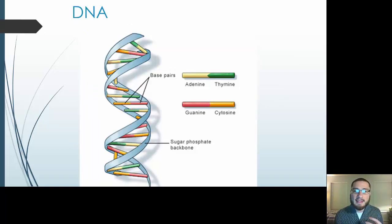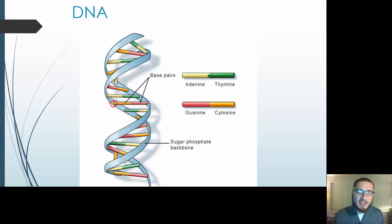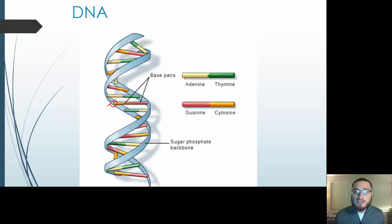When we look at a diagram of a DNA molecule, it's this twisted ladder. We're going to see the deoxyribose backbone with a phosphate group attached to it, and then the nitrogenous bases. Adenine pairs up with thymine, and guanine pairs up with cytosine.